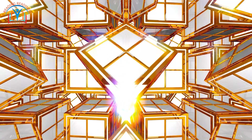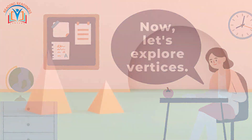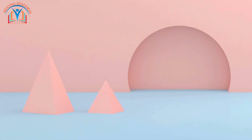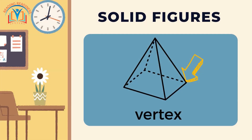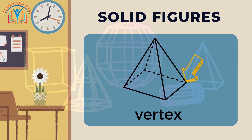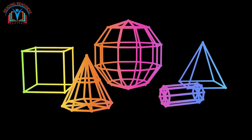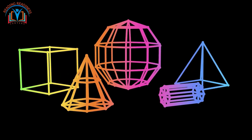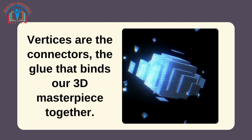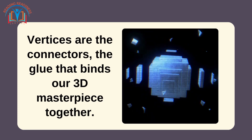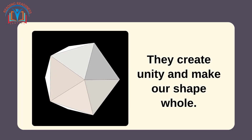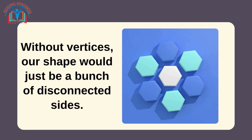The more angles, the more unique and exciting our shape becomes. Now let's explore vertices. Vertices are the special points where the sides meet. Remember those corners we just counted? Well, each corner is also a vertex. Vertices are like the meeting points where sides shake hands and say, 'We are all part of the same shape.'